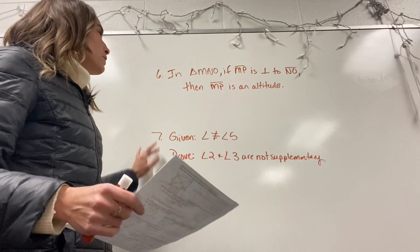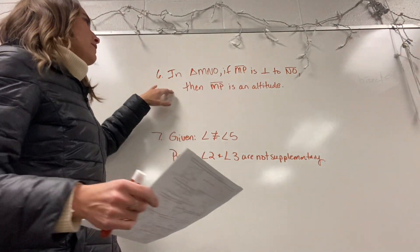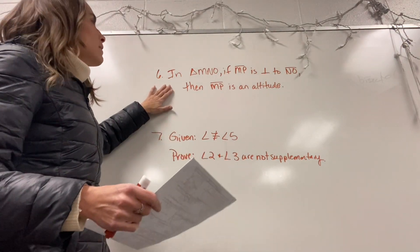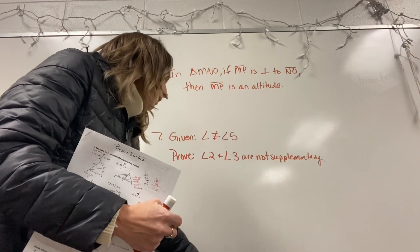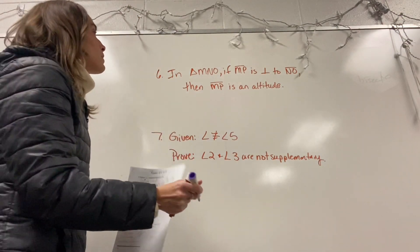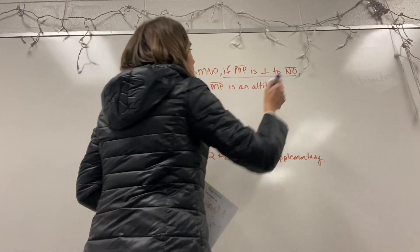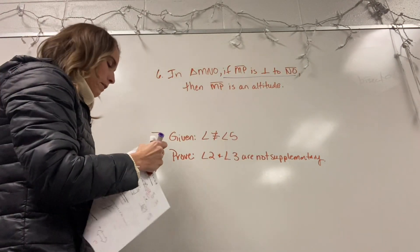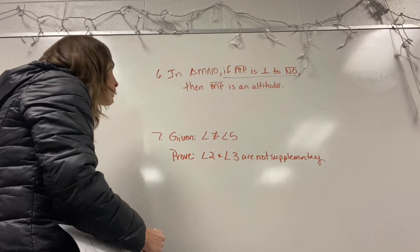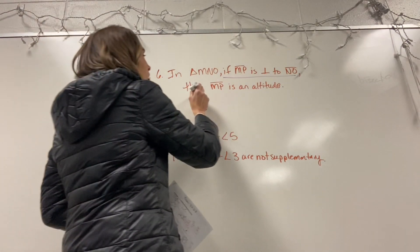So we've got two different forms of this. The first one is set up as an if-then statement, just like we used to do with our if P then Q. So right here in triangle MNO, if MP is perpendicular to segment NO, then MP is an altitude.